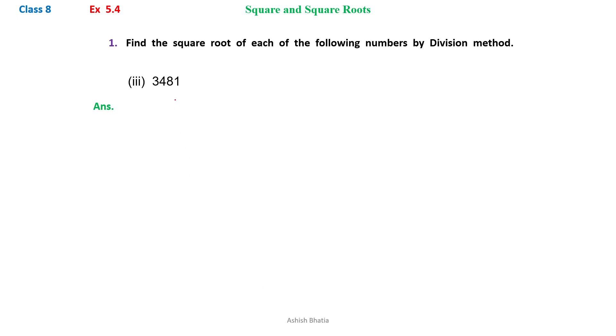Exercise 5.4, Question number 1: Find the square root of each of the following by division method. So here we need to find out the square root of 3,481.